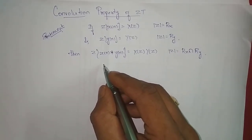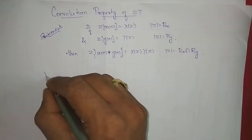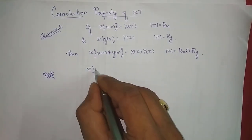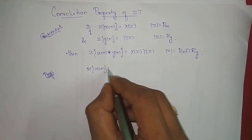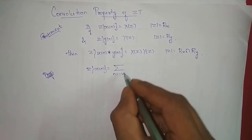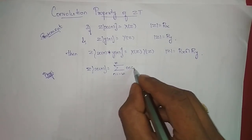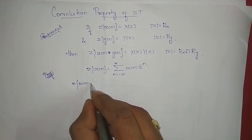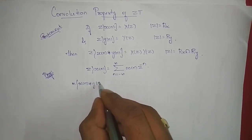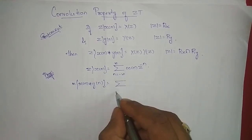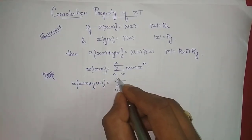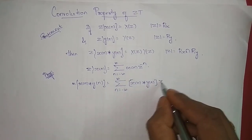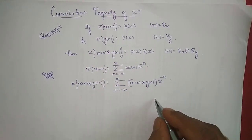We will try to prove this now. From the definition of Z-transform, Z-transform of x of n is given by summation n varying from minus infinity to infinity of x of n times z power minus n. So the Z-transform we need to prove is of x of n convolved with y of n, which equals summation n from minus infinity to infinity of x of n convolved with y of n, into z power minus n.